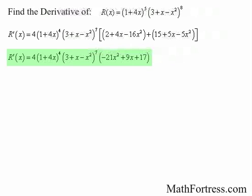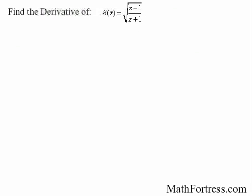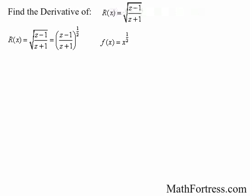Find the derivative of r of x equals the square root of the quantity z minus 1 over z plus 1. First, we need to rewrite this expression into a derivative-friendly form. We can rewrite the radical expression as a fraction of power. Here, this is a composition of functions, so we need to apply the chain rule. The outer function is equal to x to the power of 1 half, and the inner function is equal to z minus 1 over z plus 1.